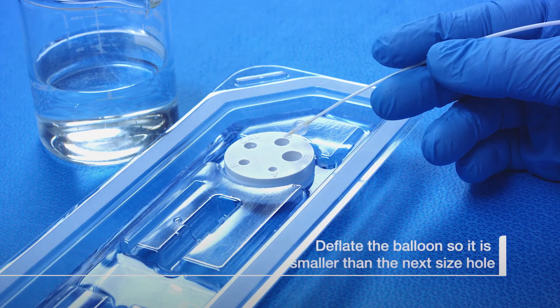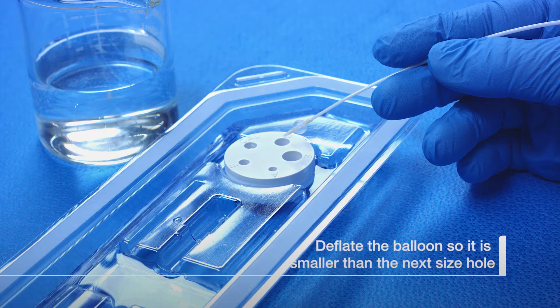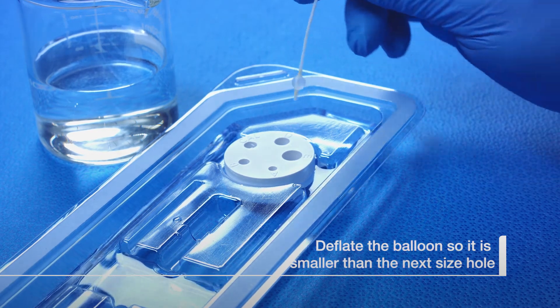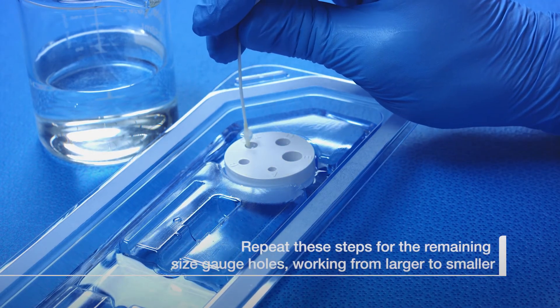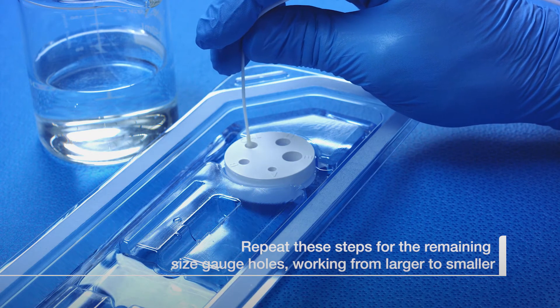Deflate the balloon so it is smaller than the next size hole. Repeat these steps for the remaining sizing gauge holes, working from larger to smaller.